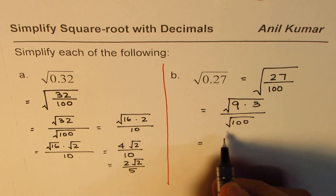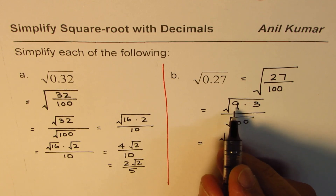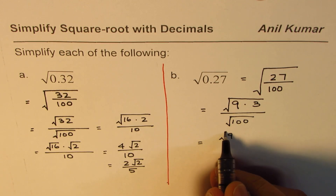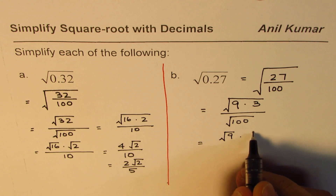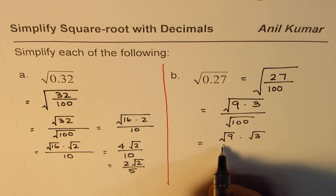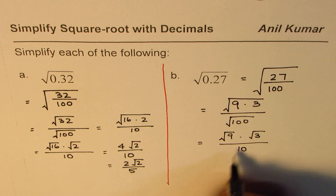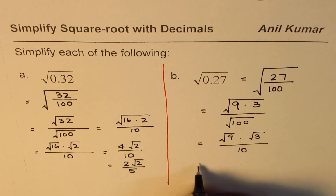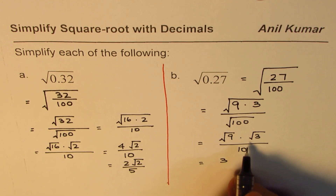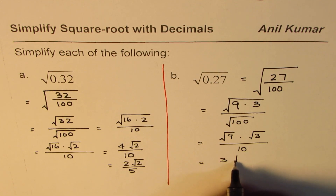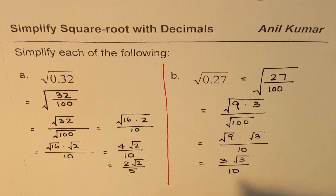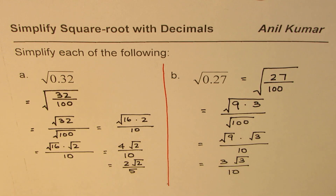Using the product rule on 9 times 3, we get square root of 9 times square root of 3, divided by square root of 100, which is 10. Square root of 9 is 3, so we write this as 3√3 over 10. That is the simplified form for the second example: square root of 0.27.